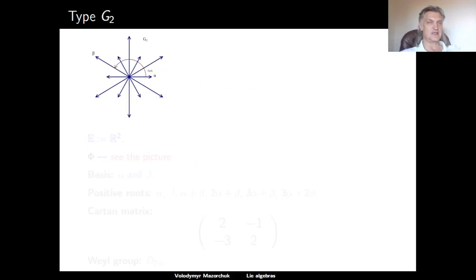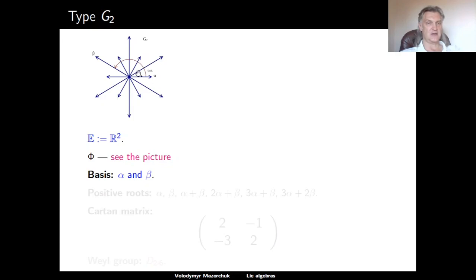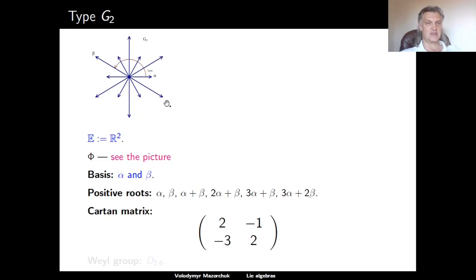We have already seen how the root system of type G2 looks in the plane. This is an explicit geometric picture of a root system of type G2 in the Euclidean plane R^2. As a basis, we take the roots α and β. The positive roots are then α, β, β+α, β+2α, β+3α, and 2β+3α. The root α is shorter and β is longer. The Cartan matrix has 2s on the diagonal and −1 and −3 distributed accordingly. The Weyl group of this root system is the symmetry group of the regular hexagon, which is the dihedral group D_{12}.